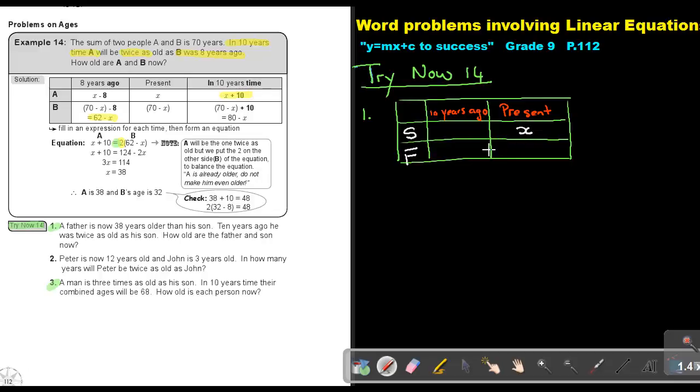But 10 years ago, that means minus. So he was 10 years younger and the father was also 10 years younger. And if we simplify that, we're going to get X plus 20. We can simplify the expression.